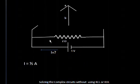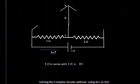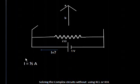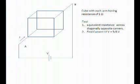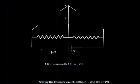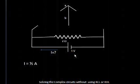This 1 ohm is now in series with another 1 ohm, making 2 ohms total. So our simplified network is just 1 volt across a 2 ohm resistance, and we can very easily find the current: I = 1/2 ampere.